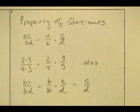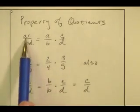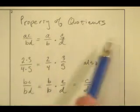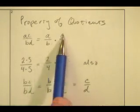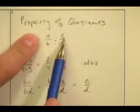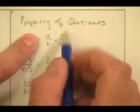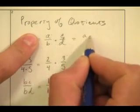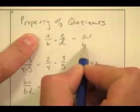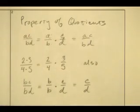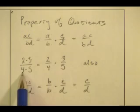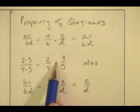First let's talk about this property of quotients. It says that AC divided by BD is the same thing as A over B times C over D. We know this. Remember when we multiplied fractions? When you multiply fractions you do A times C over B times D. So the same thing is going on here. For instance, 2 times 3 over 4 times 5 is the same thing as 2 fourths times 3 fifths.